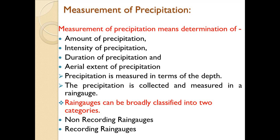Precipitation is measured in terms of depth. The unit of precipitation may be mm, inches, centimeter, or in the case of heavy rainfall, meters. The precipitation is collected and measured with the help of a rain gauge, which is the instrument used for measurement of precipitation.